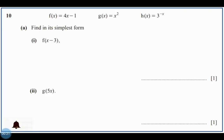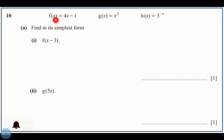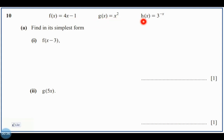Question number 10 is a problem about functions. You will see that there are three functions: F, which is 4x minus 1; G, which is x squared; and H, which is 3 raised to the power of negative x.